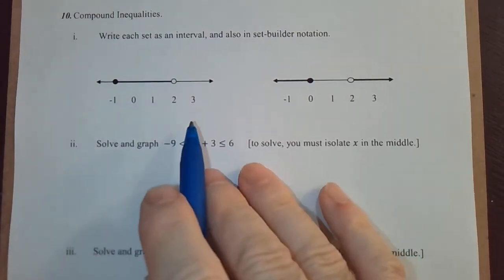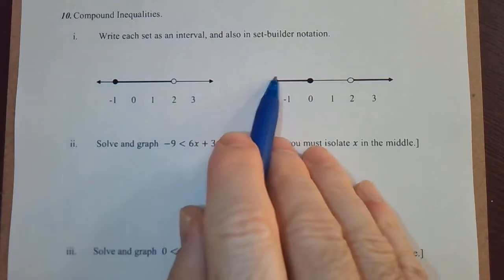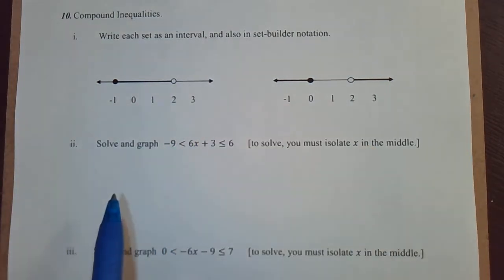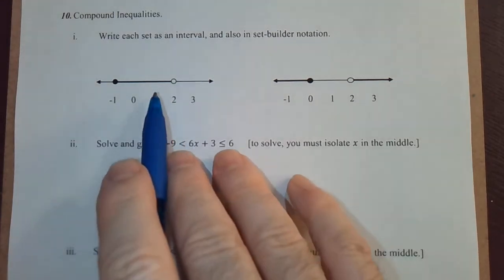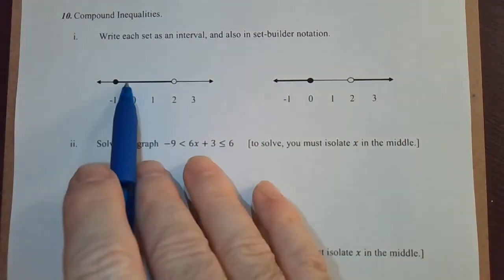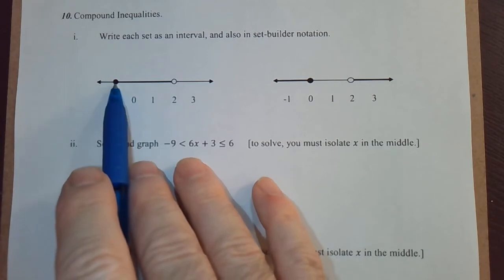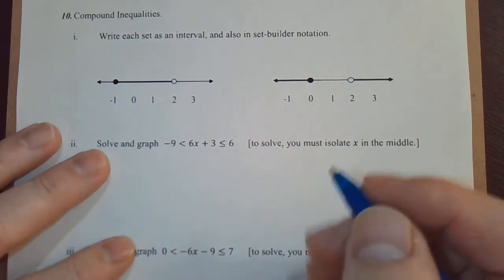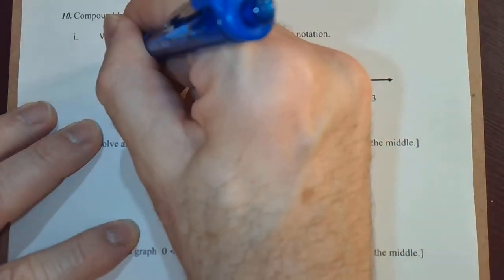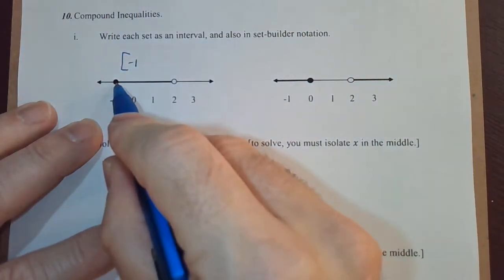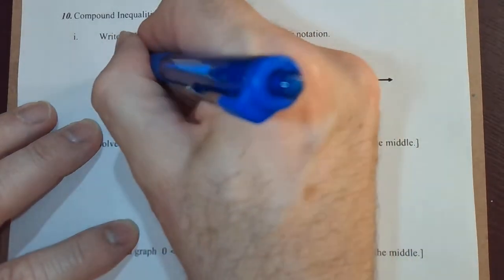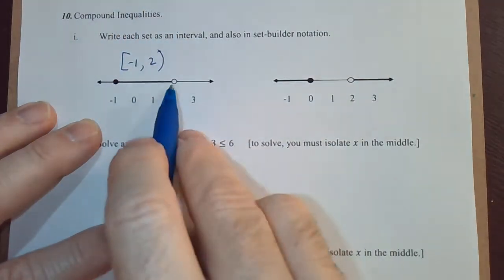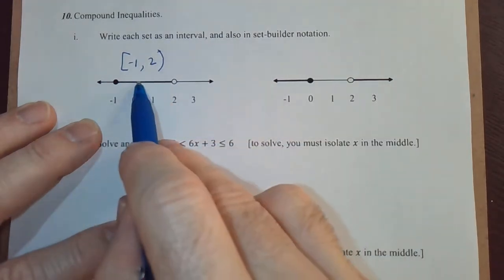So just as a warm-up here, write each of these sets as an interval and in set builder notation. By the set, it means the shaded part. It might be hard to see, but the only shaded part is in between here and here. So as an interval, it's very easy. Negative 1 with a square bracket because that's a solid circle, comma 2 with parentheses because that's an open circle.